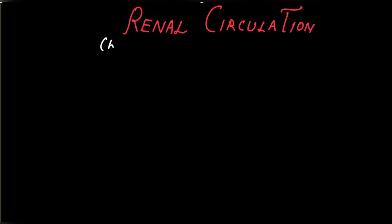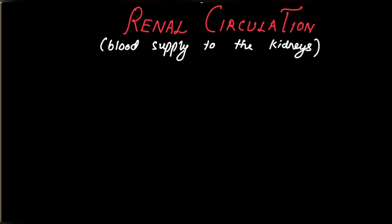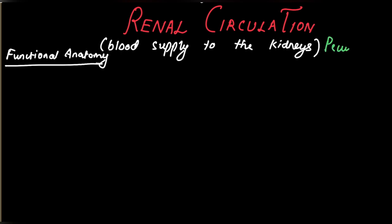Good day, dear students. This is a video on renal circulation, which literally means blood supply to the kidneys. The renal circulation has some peculiarities which differ from systemic circulation. We'll be talking about the functional anatomy of renal circulation — anatomy not in detail but as related to physiology — and then the peculiarities: how does renal circulation differ from systemic circulation and how is it unique in certain ways.